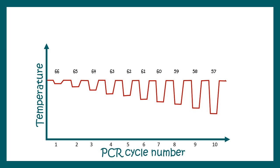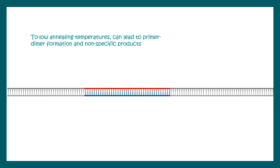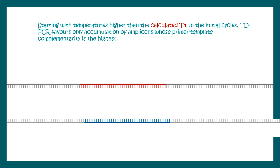What's the advantage of this kind of touchdown-based approach? If we have a very low annealing temperature, there could be non-specific binding of the primer and primer-dimer formation. And if we have too high an annealing temperature, even specific interactions won't be perfect, resulting in low yield.